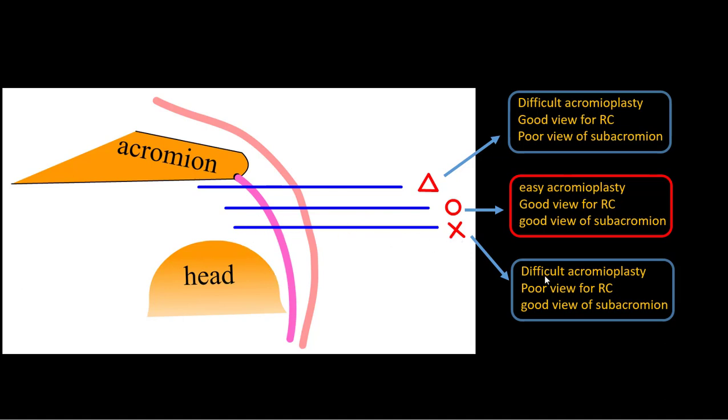This one is bad because it provides difficult acromioplasty and poor view for the rotator cuff because it's too close to the rotator cuff. It has good view of the subacromion, but it's not enough. So I recommend the middle one. You better choose that. Thank you.